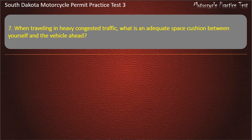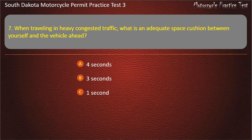Question 7: When traveling in heavy congested traffic, what is an adequate space cushion between yourself and the vehicle ahead? 4 seconds; 3 seconds; 1 second; 2 seconds. Answer: 4 seconds.